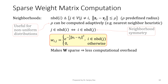The weights wij must now incorporate neighborhoods. If i and j are neighboring points, then wij is the similarity between them; otherwise, wij is zero. Incorporating neighborhoods in this manner makes the weight matrix sparse, which reduces the computational overhead. This in turn helps in dealing with large data sets.